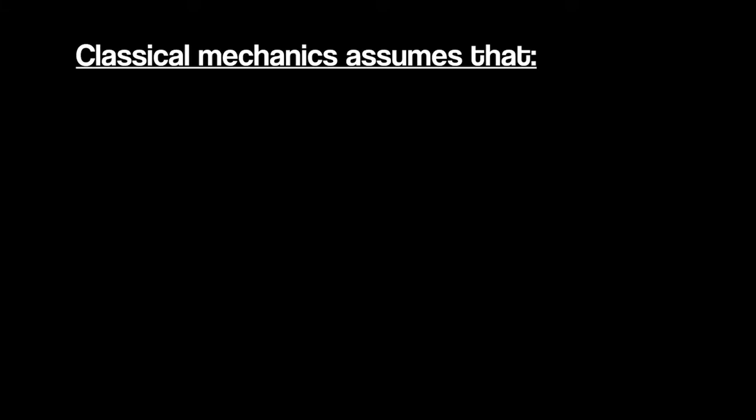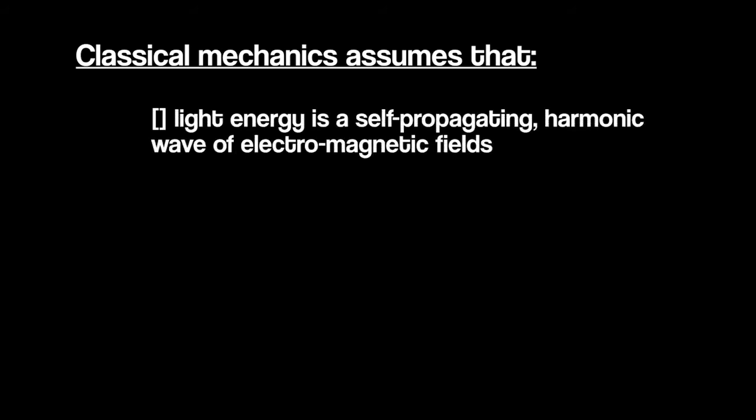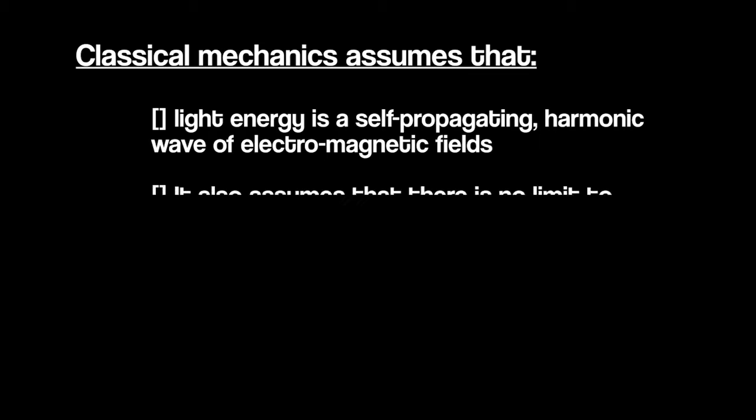Now that you understand the principle of Compton effect, I am going to talk about the classical story of light scattering and its limitations. Classical mechanics assumes that light energy is a self-propagating harmonic wave of electromagnetic fields. It also assumes that there is no limit to how small the energy in a light beam can be.